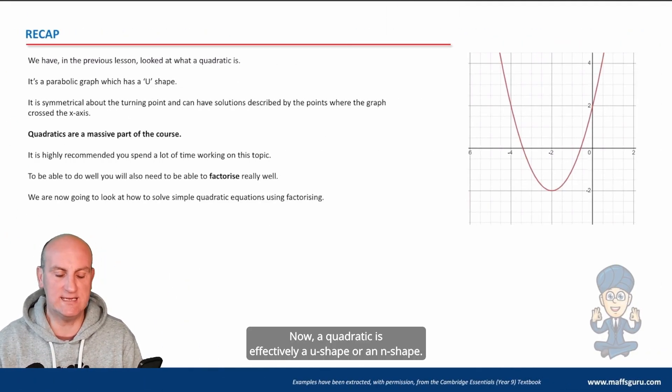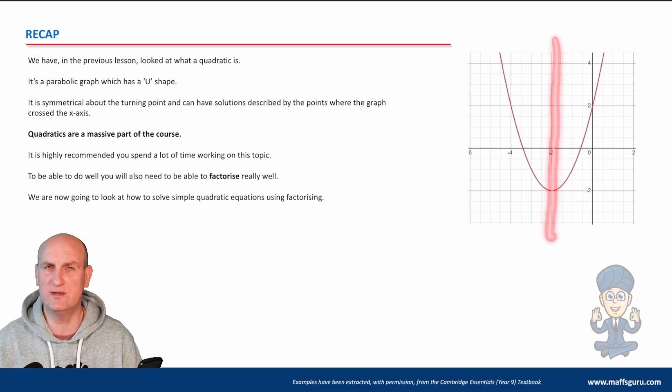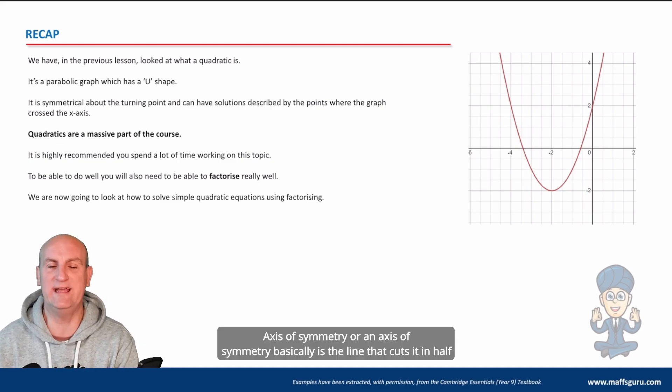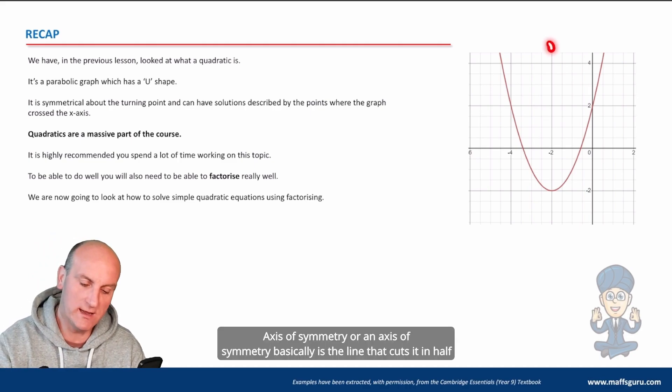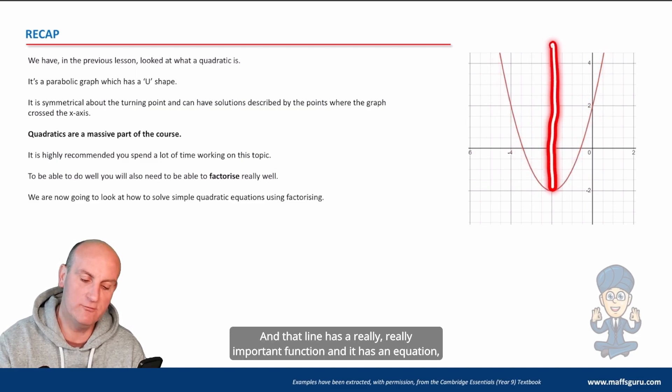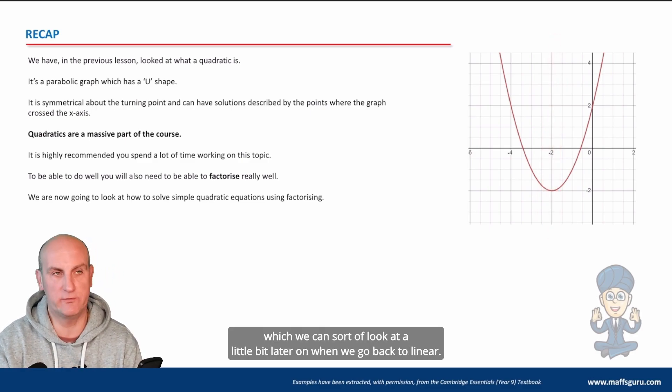Now, a quadratic is effectively a U-shape or an N-shape. It's a special type of graph. It has an axis of symmetry. Do you understand what I mean by that? So an axis of symmetry basically is the line that cuts it in half so that it's even either side. And that line has a really important function, and it has an equation, which we can look at a little bit later on when we go back to linear.